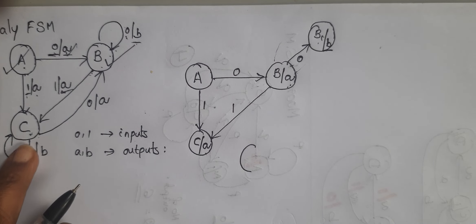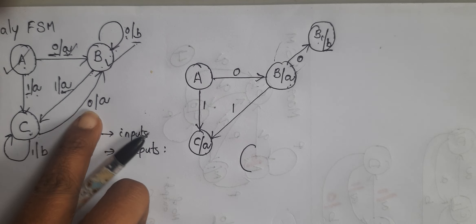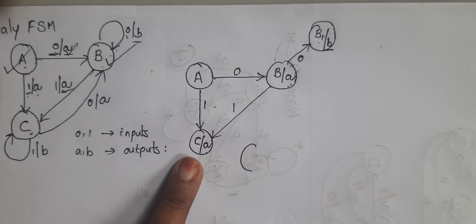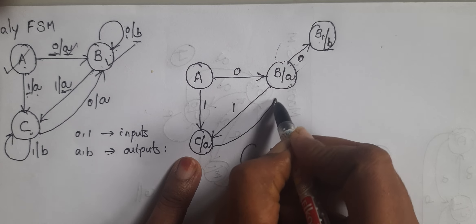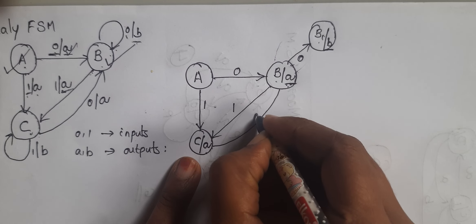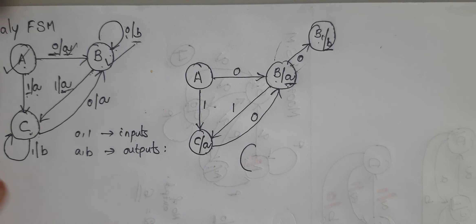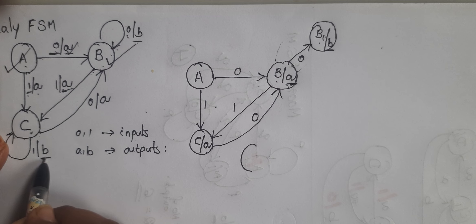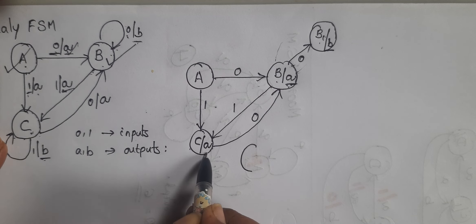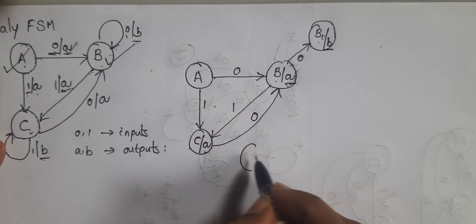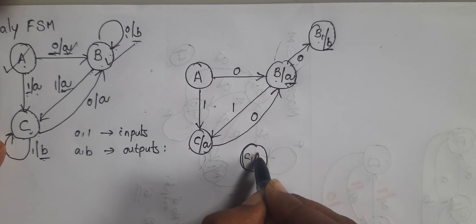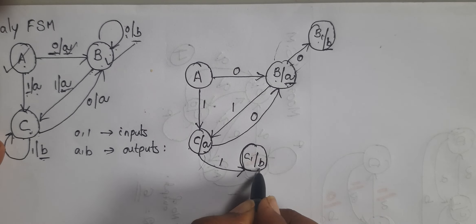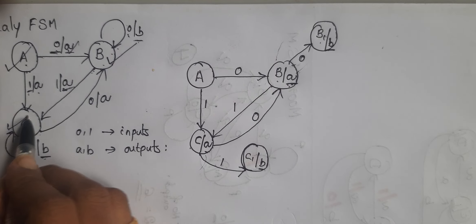Coming to state c. For c, when the input is 0, it goes to state b with output a. For input 1, it remains in the same state but the output is b, whereas here the output is a. So we have to draw an extra state — c1 with output b. Here input is 1 and the output is b.